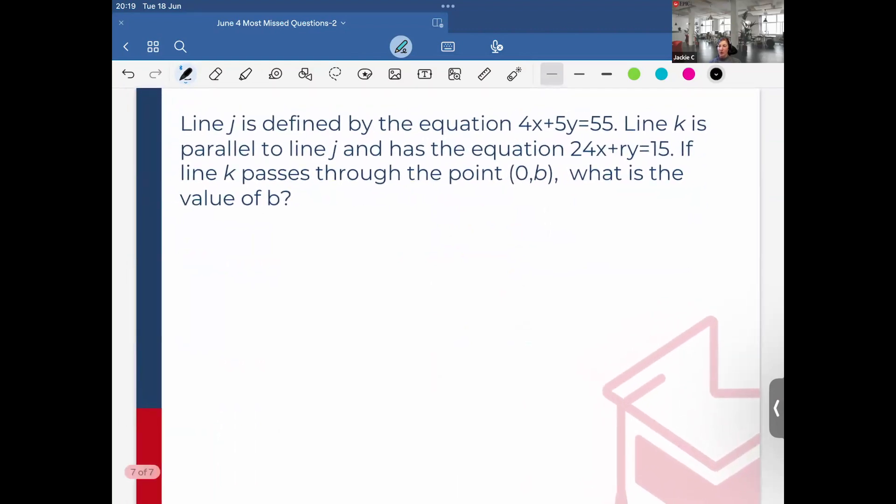And then final most missed question was this one. So line j is defined by the equation 4x plus 5y equals 55. Line k is parallel to line j and has the equation 24x plus ry equals 15. If line k passes through point (0, b), what is the value of b? So if you've been practicing for the SAT, you probably come across very similar problems. So first things to note in this problem, one, parallel lines always have the same slope.